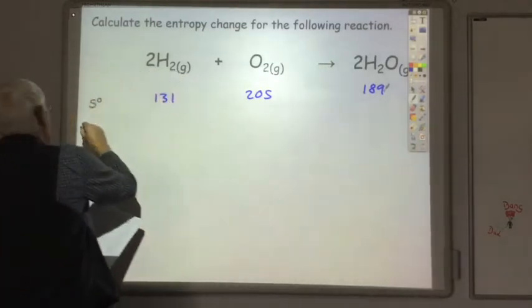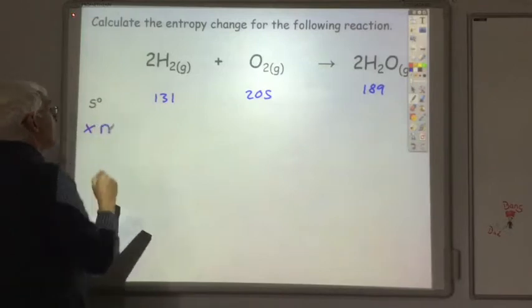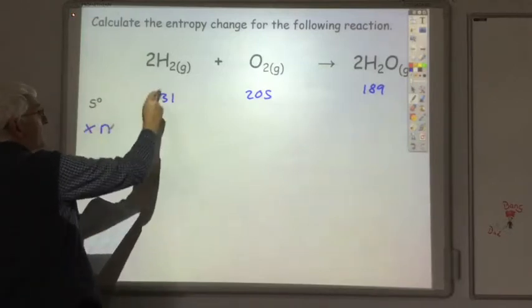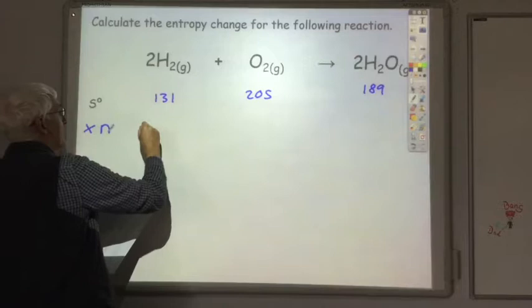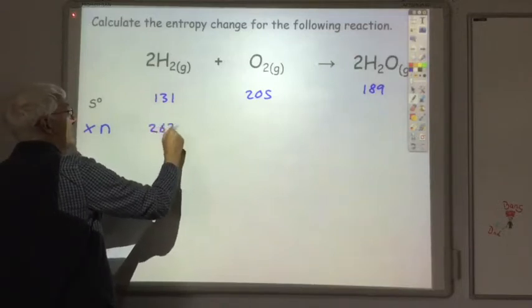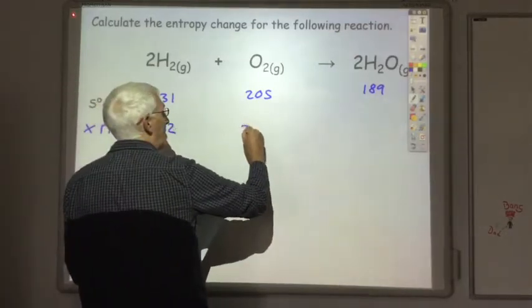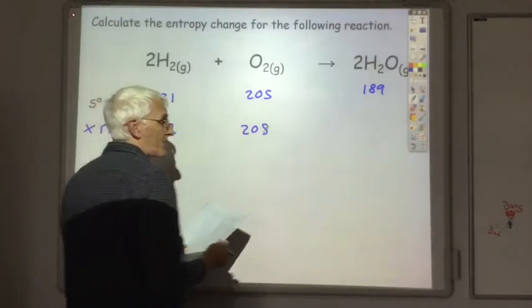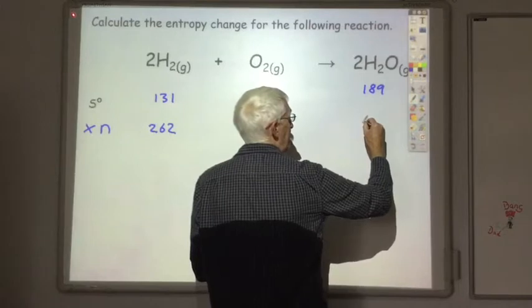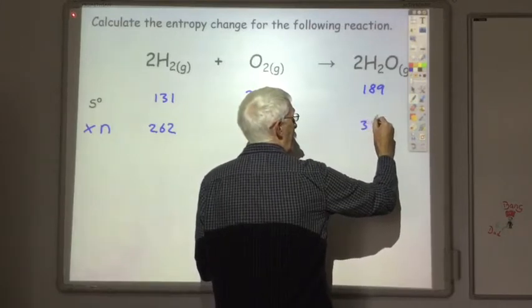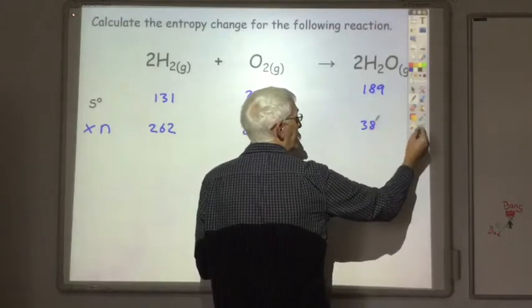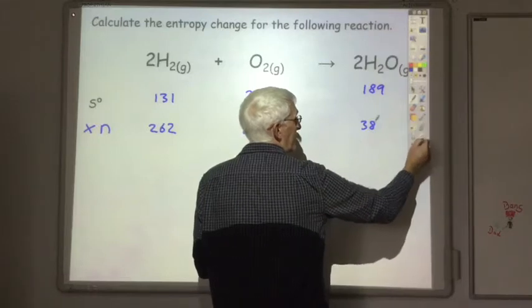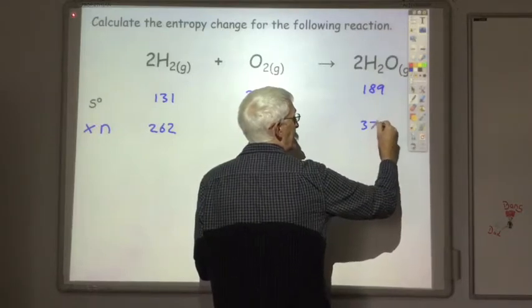Okay, we then want to multiply through by the number of moles. So, we've got two lots of H2. So, that would be 262. Only one lot, one mole of oxygen. And two moles of H2O. So, that's going to be 378.